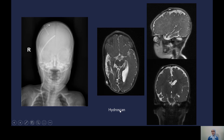We perform a limited MRI for these patients, which we call a hydroscan. It is a single short fast-spin sequence that takes only a few seconds per acquisition, done without sedation. We tolerate a little motion on these. There is limited parenchymal resolution, but it is still diagnostic enough to tell us whether the ventricles have increased in size and to locate the shunt and valve.